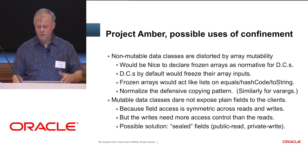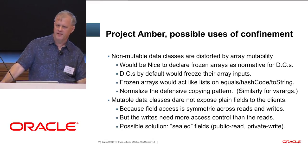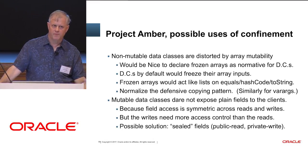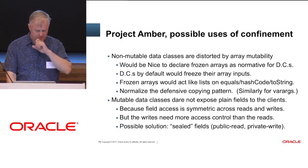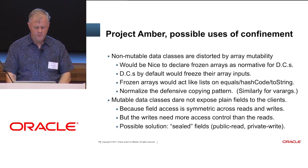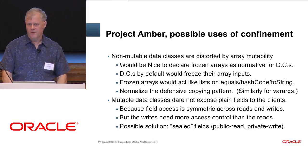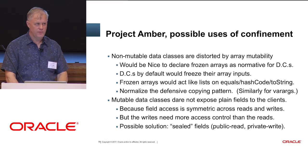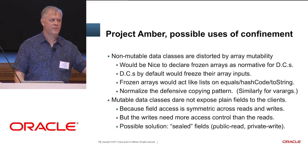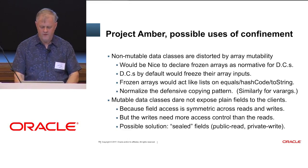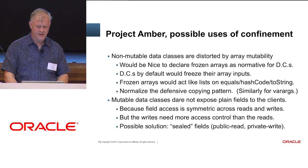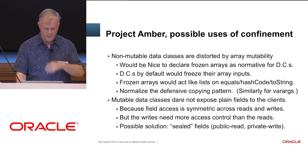In Amber, we're trying very hard to get to an immutable data model for new code. This is a place where frozen arrays would help. Defensive copying, by the way, is bad for the same reason mutability is bad — it's a cost you have to pay over and over again to try to get ahead of the racers. Frozenness and immutability gets you away from defensive copying.